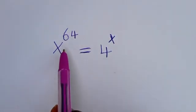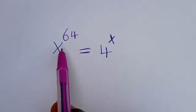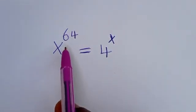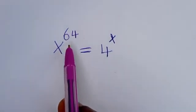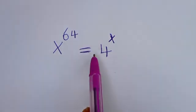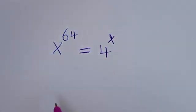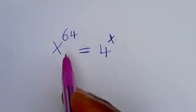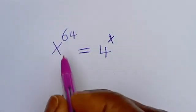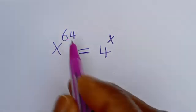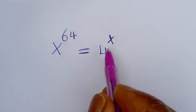Hello. How to solve for s in this equation: s to the power of 64 is equal to 4 to the power of s.